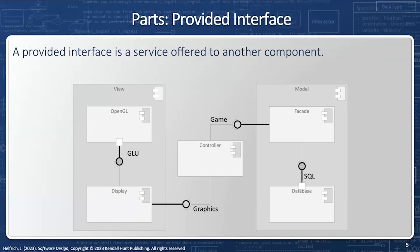A provided interface is a service offered to another component. For example, the database provides a SQL interface. Notice the database functions just fine without the facade. So the database does not require the facade, but the database provides functionality. Notice that there could be a thousand different recipients of the database's SQL interface, or there could be none. The database doesn't know or care — it just provides an interface.